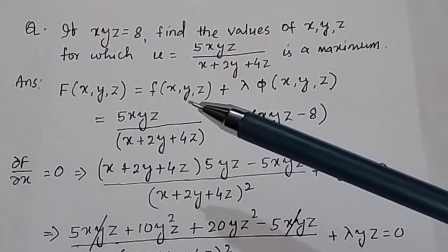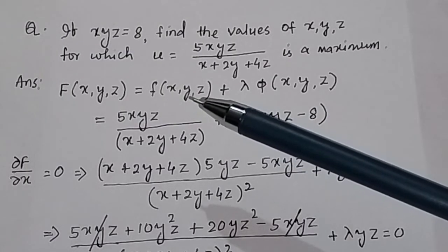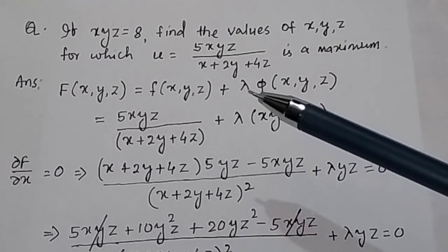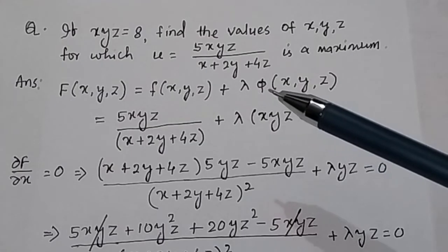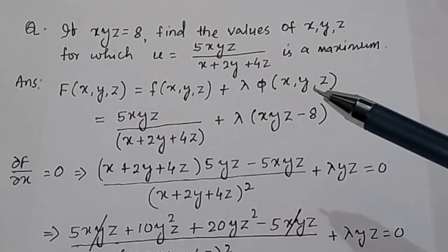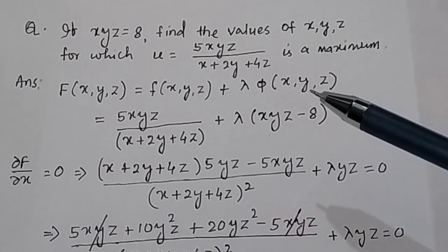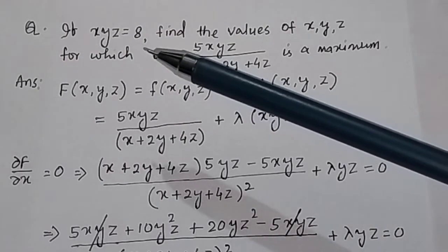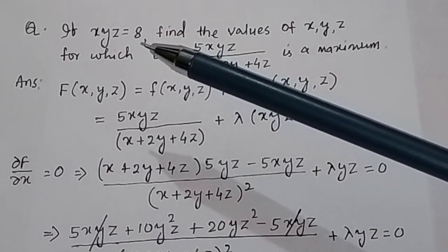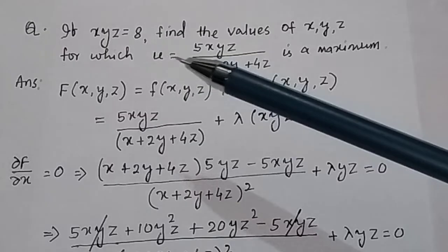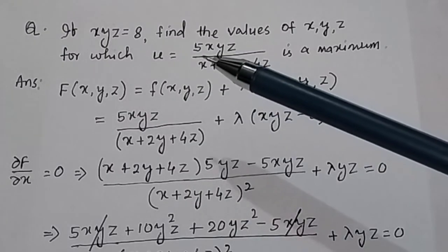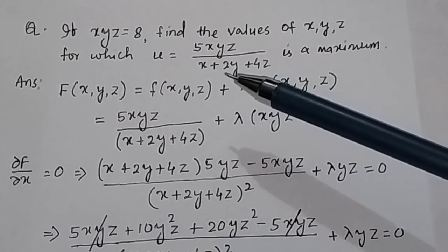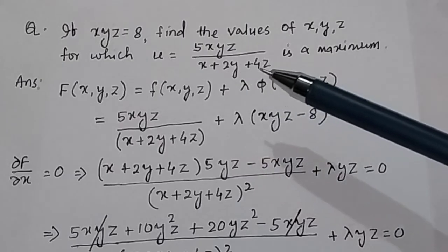Here the function f(x,y,z) is called the objective function, lambda is the Lagrange multiplier, and phi(x,y,z) is called the constraint or condition. The condition given is xyz equals 8, and the function is u equals 5xyz divided by (x plus 2y plus 4z).